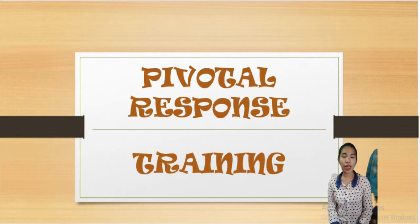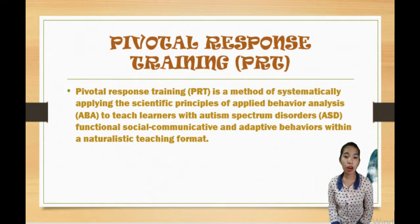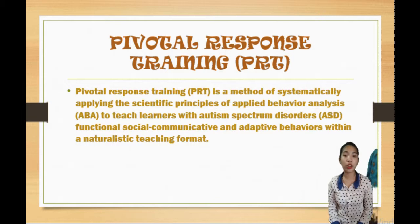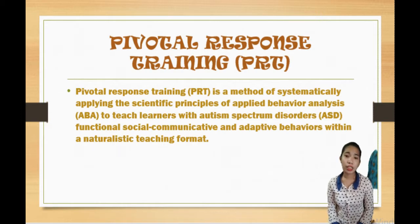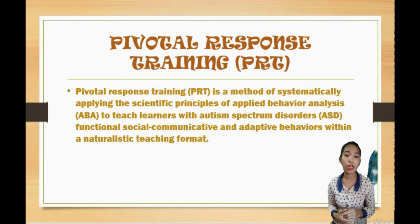Good day everyone, I'm Elsie Jane G. Barcelote. I'm going to discuss PRT, or Pivotal Response Training, which is a method of systematically applying the scientific principles of Applied Behavior Analysis (ABA) to teach learners with autism spectrum disorder (ASD) functional social, communicative, and adaptive behaviors within a naturalistic teaching format. PRT uses play therapy to target social skills development; uninstructed interactions are common, and lessons can include taking turns, imitation, joint attention, or peer-prompted interaction.